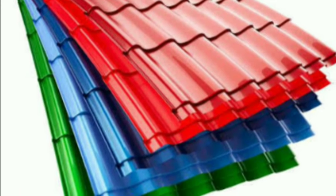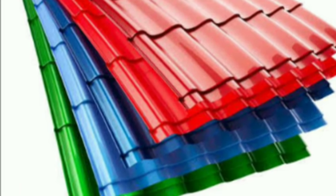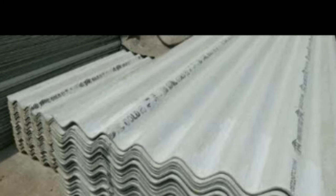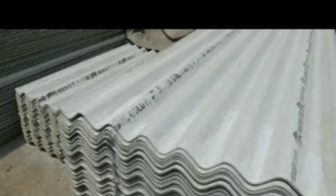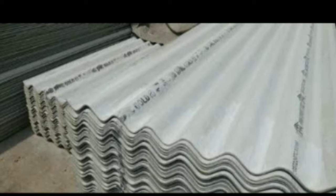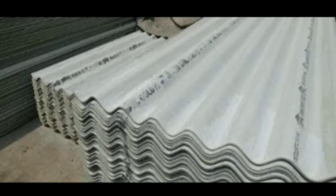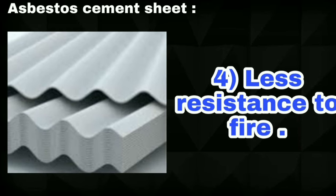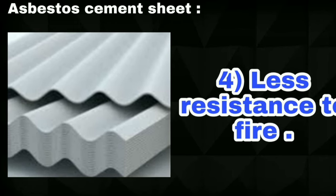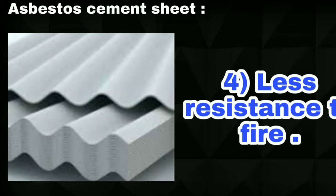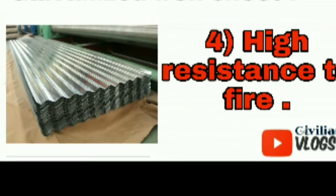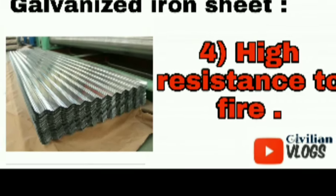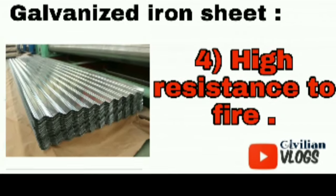The initial cost of galvanized iron sheet is high. Difference number 4: asbestos cement sheet has less resistance to fire, whereas galvanized iron sheet has high resistance to fire. So for fire resistance, AC sheet is low and GI sheet is high.